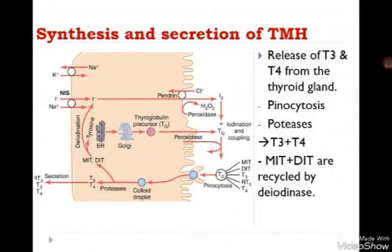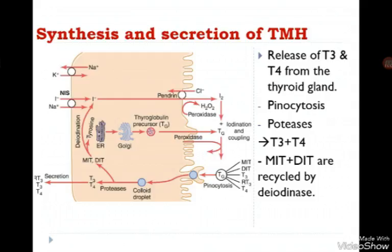A small amount of byproducts from this reaction — MIT (monoiodotyrosine) and DIT (diiodotyrosine) — are recycled by an enzyme called deiodinase. A deficiency in this enzyme may cause serious problems like hypothyroidism and goiter.